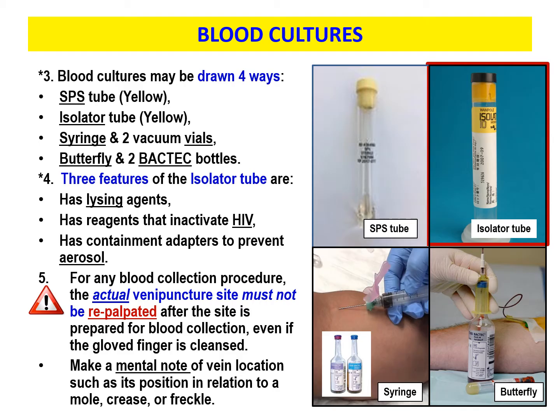There's also the butterfly method. You can attach your butterfly directly to your holder and draw into the bottles. Remember, the anaerobic bottle — where we don't want air — should not be drawn first with a winged infusion set. Any other time, the anaerobic bottle would be filled first. So the four ways to draw blood cultures are: the SPS tube, the isolator tube, the syringe, and the butterfly.